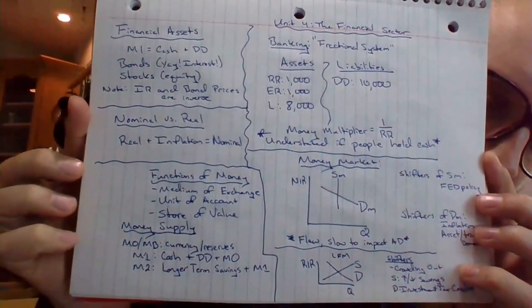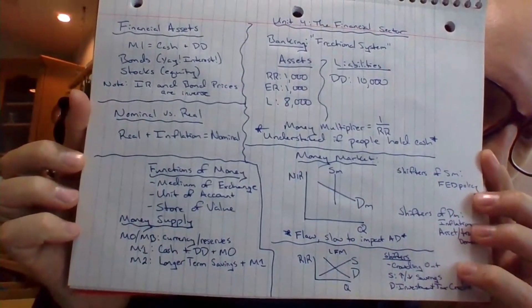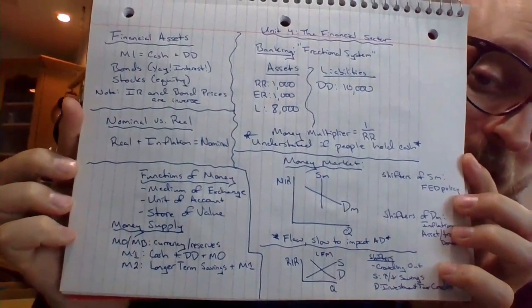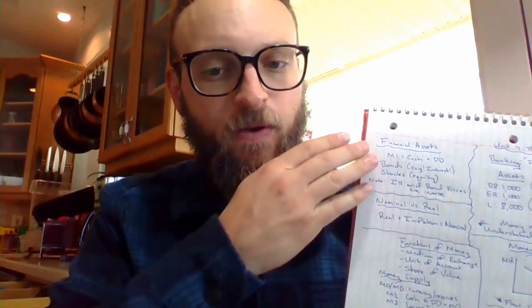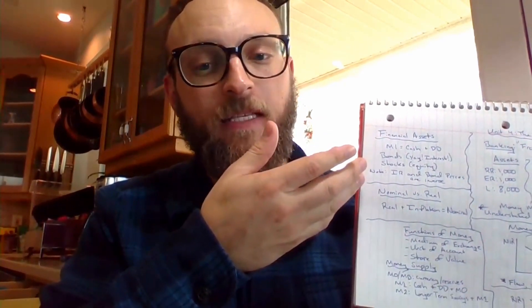Let's see if I can zoom in. Chapter four is pretty chill and also pretty recent, so I think you guys will feel like this is pretty fresh in your mind. We kind of just did banking. So it begins with unit four: financial assets. The discussion is about what exactly is an asset.